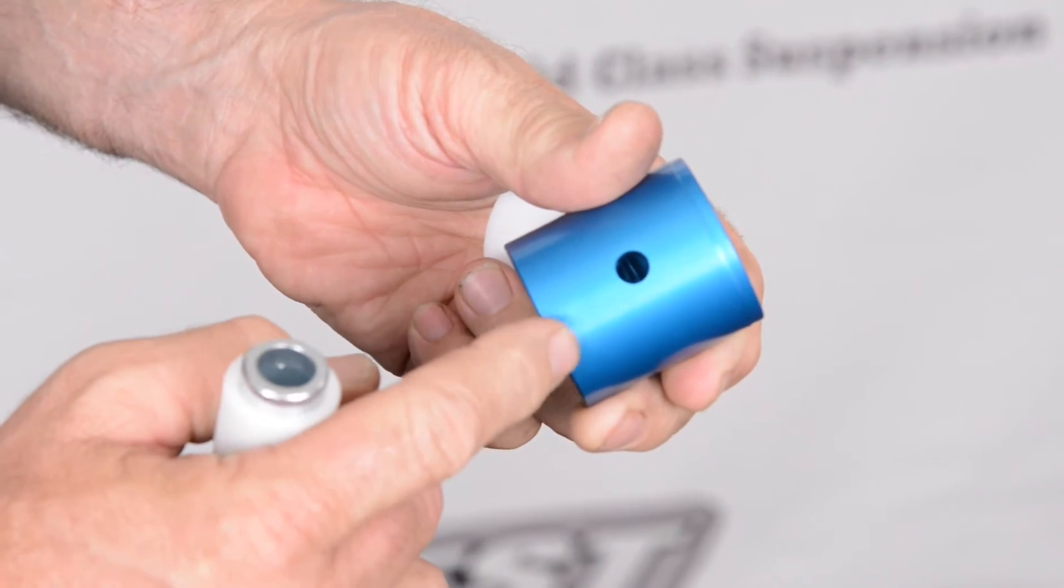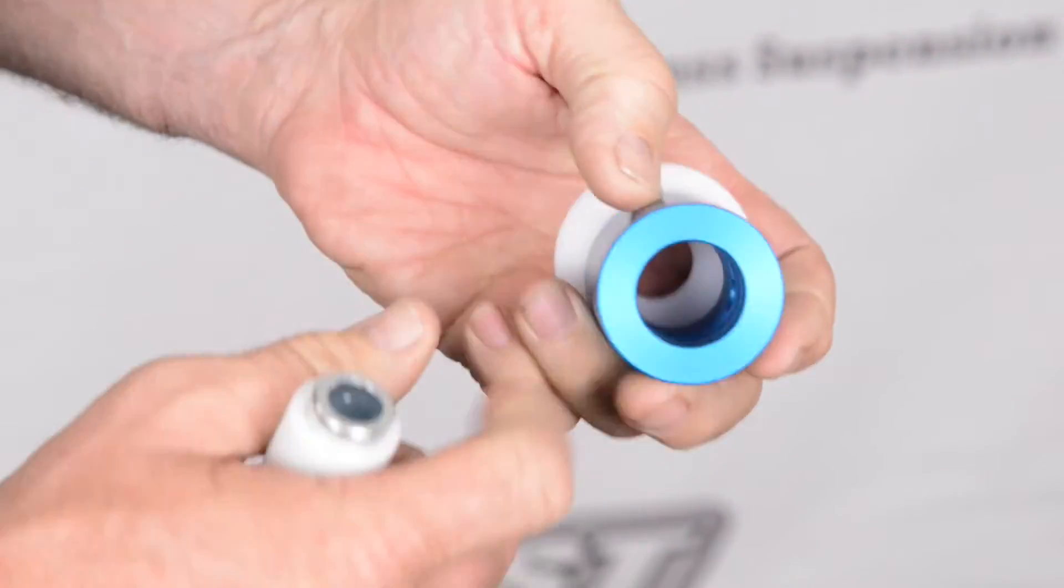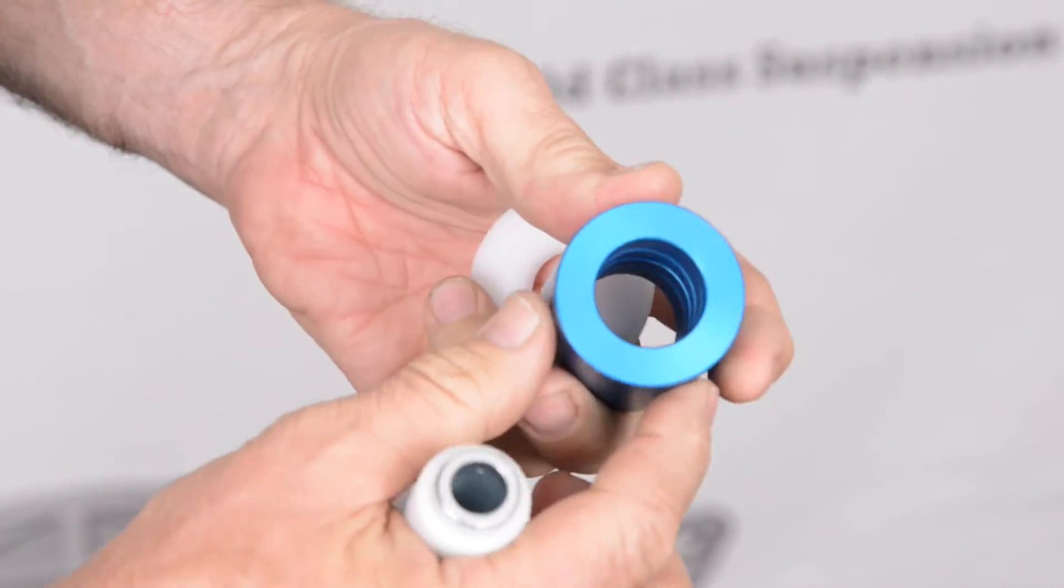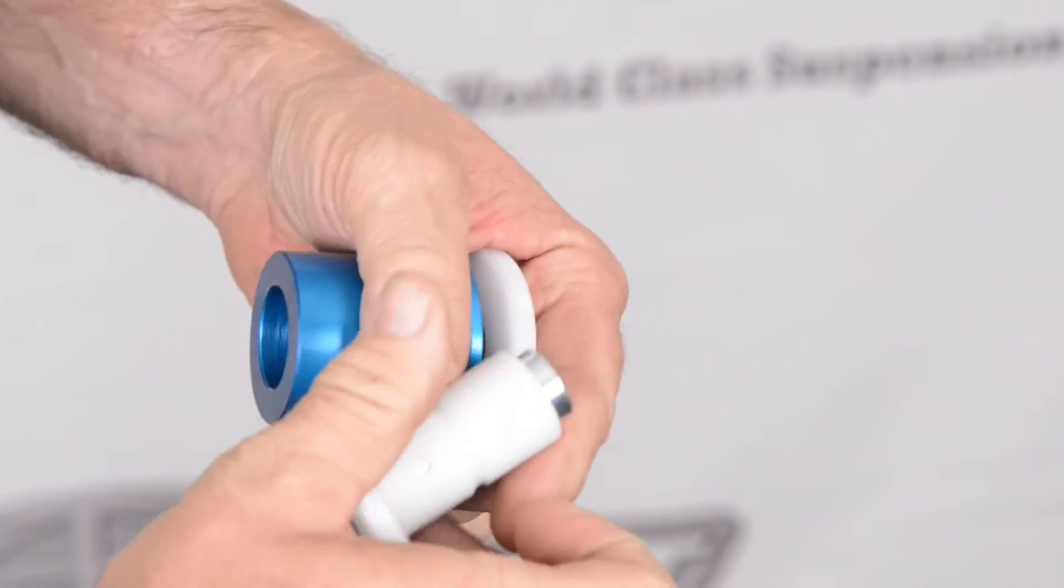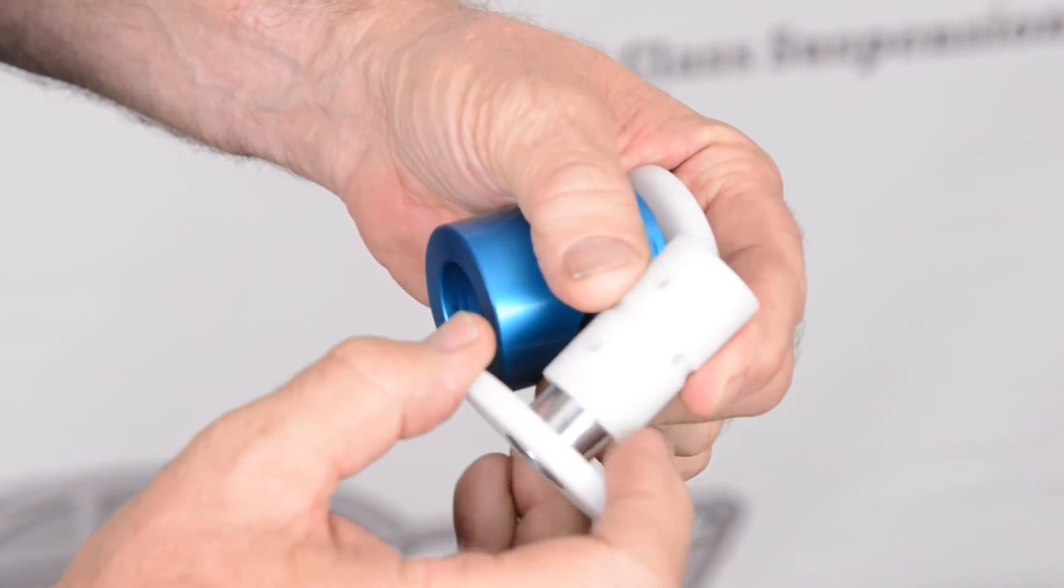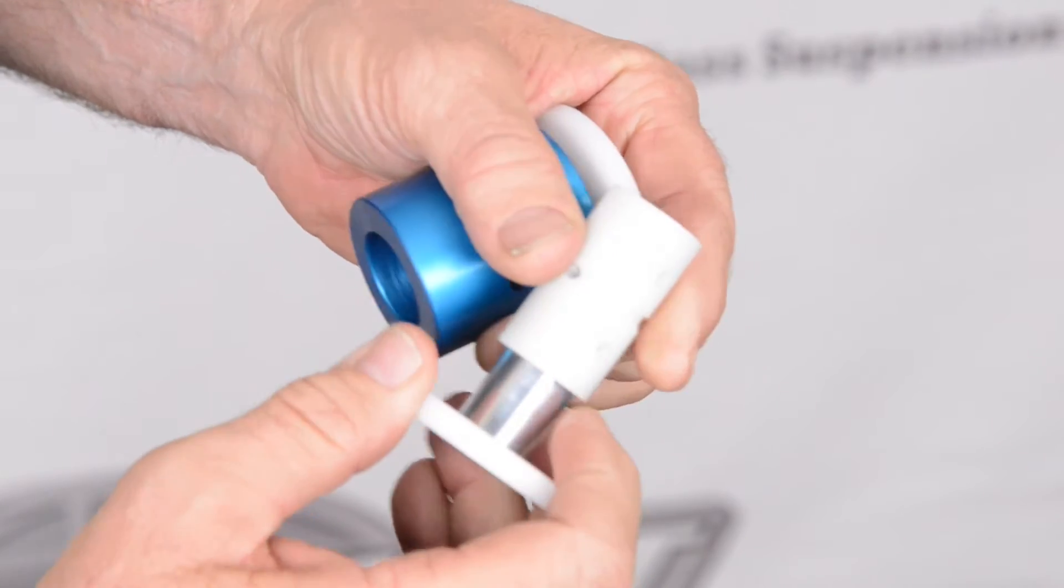This housing is pressed into the tubular control arm. It's channeled and rifled inside here for grease penetration. Here we have a plastic inner rotating sleeve. It rides on a steel pin.